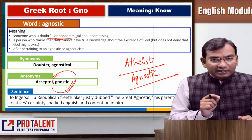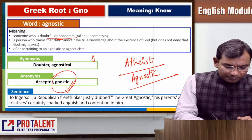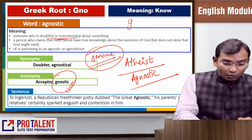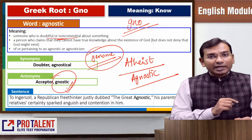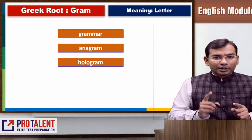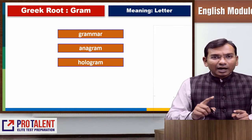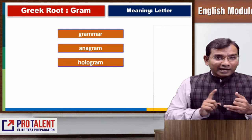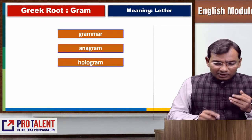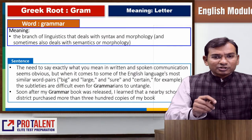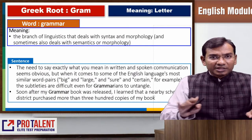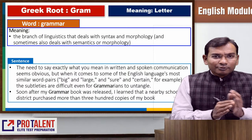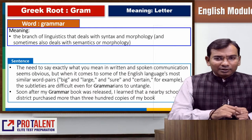The next root is GRAM, which refers to a letter. Words derived from it include grammar, anagram, and hologram. Grammar is a branch of linguistics that deals with the arrangement of letters — syntax and morphology. So grammar is connected to the root gram meaning letter.